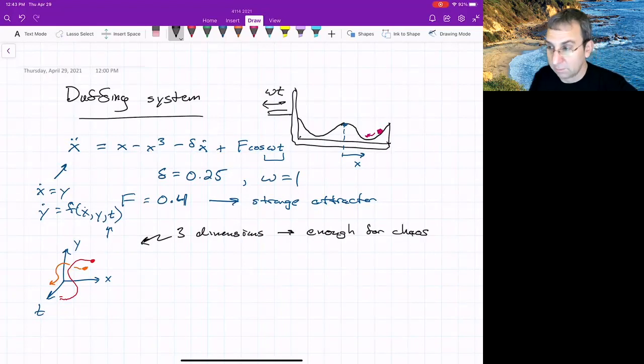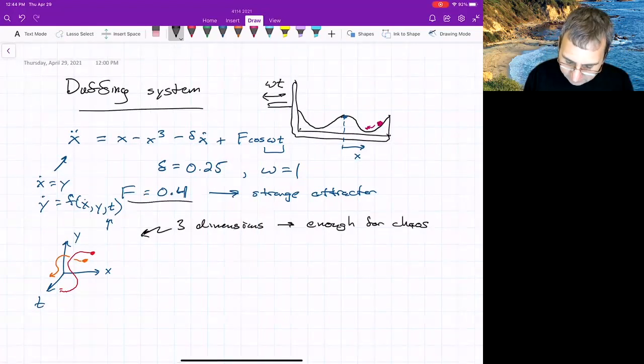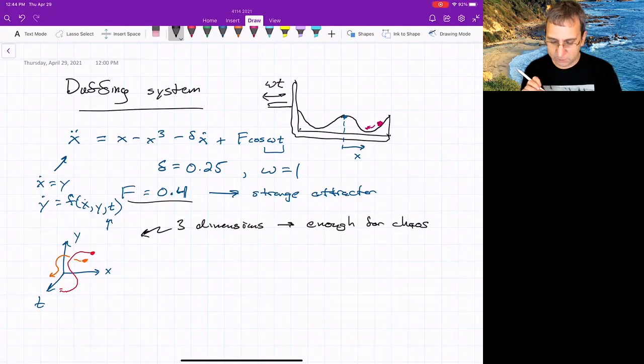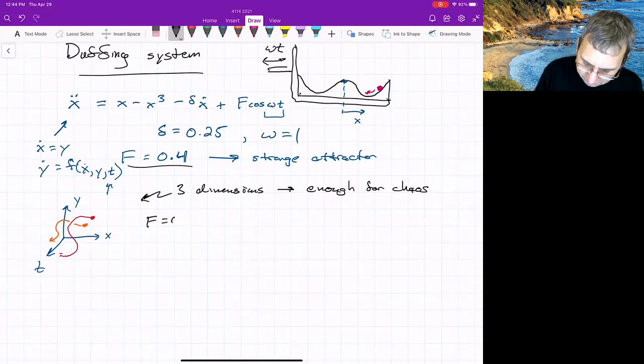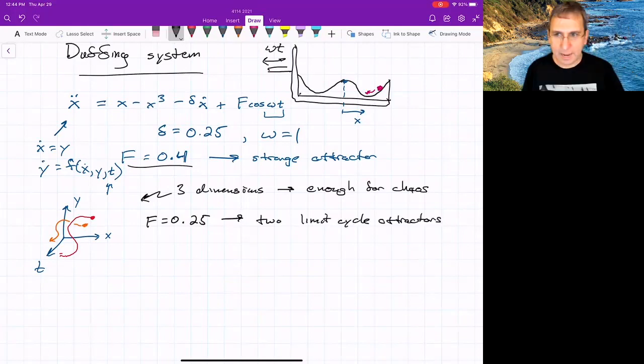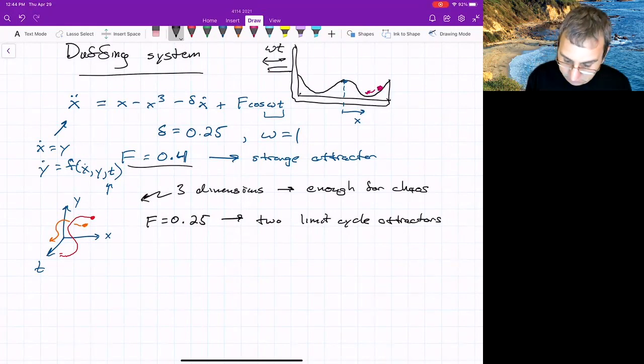Last time we said at F equals 0.4, there was this strange attractor seen, at least in the numerical system. If you adjust that a little bit, you can get other types of behavior. If we turn that knob and go to F of 0.25, we get two limit cycle attractors. I don't know what the full bifurcation diagram is. There's three parameters here: omega, delta, and F.